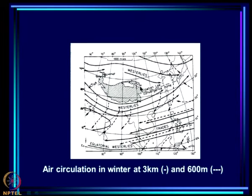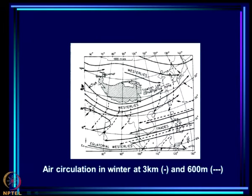Why is there a split? Because this Tibetan plateau is 5 kilometers high. We are looking at winds at 3 kilometers - they cannot penetrate the plateau, so they have to go around. That is why you see the subtropical jet in winter comes like this.